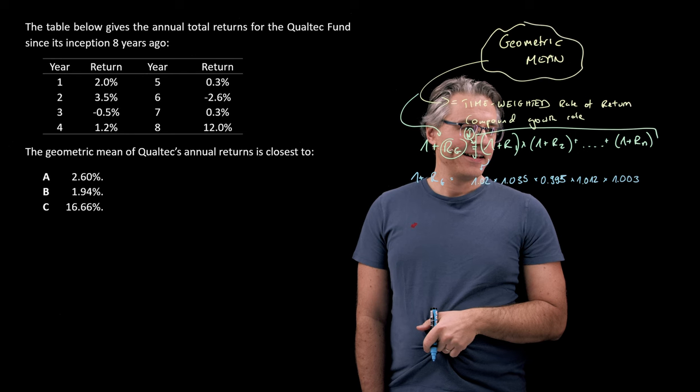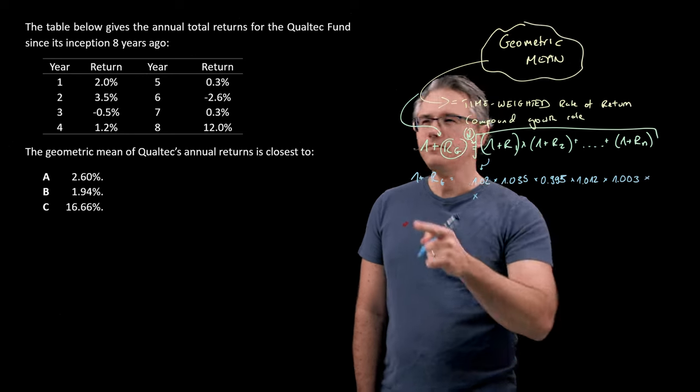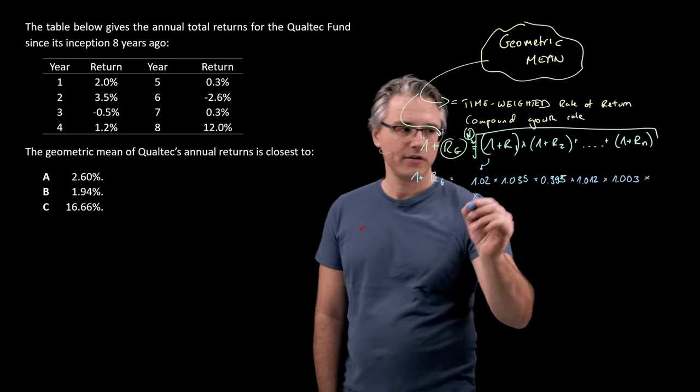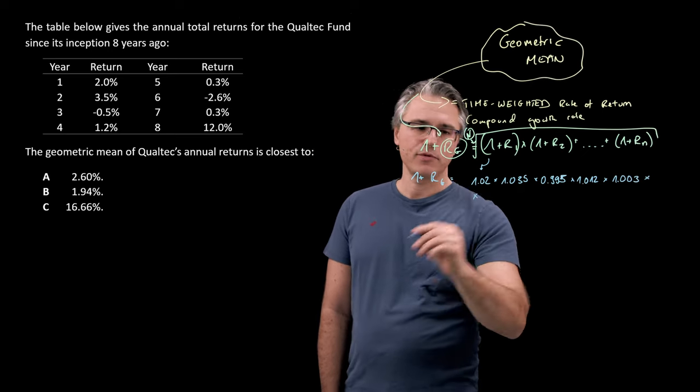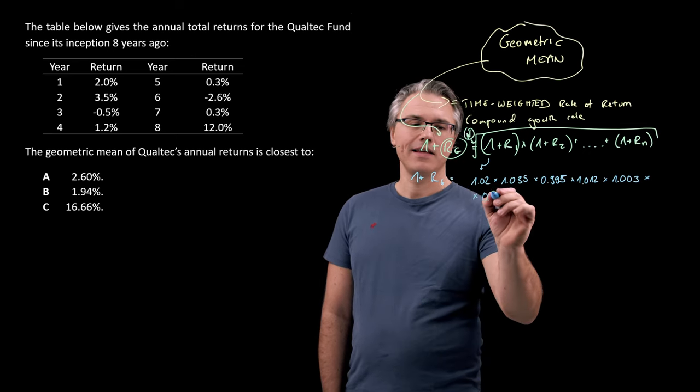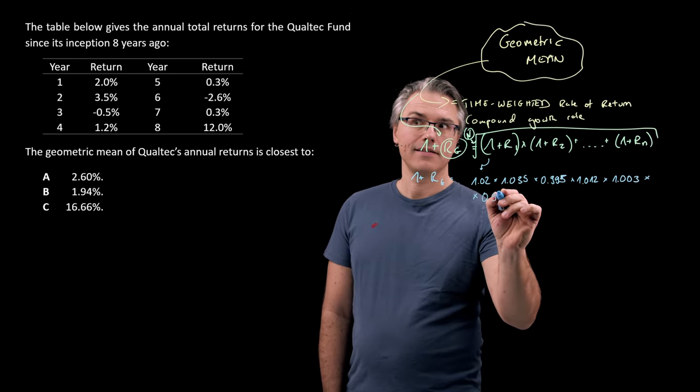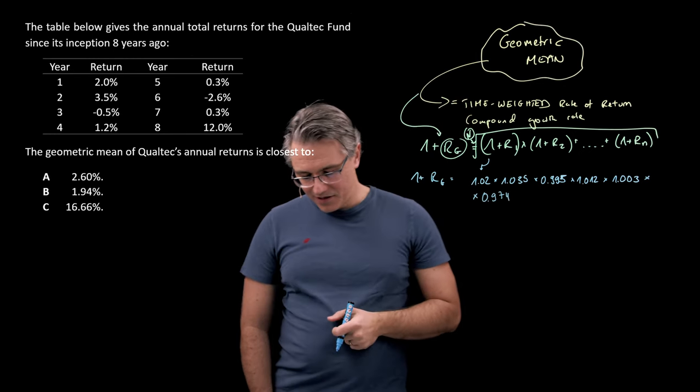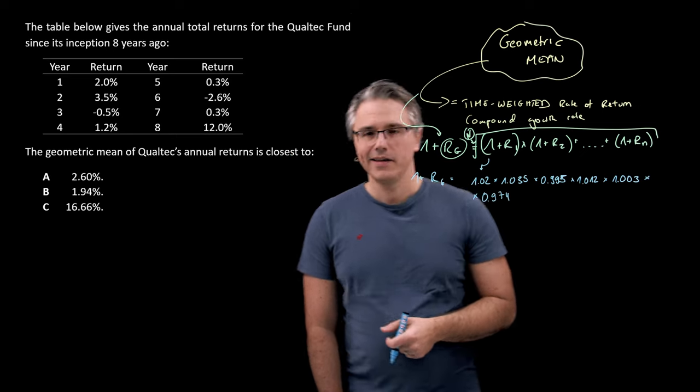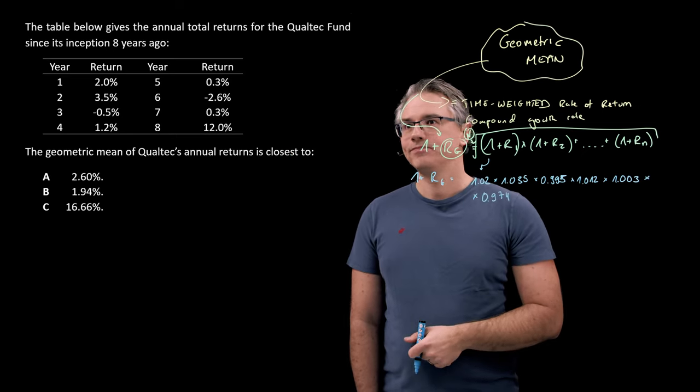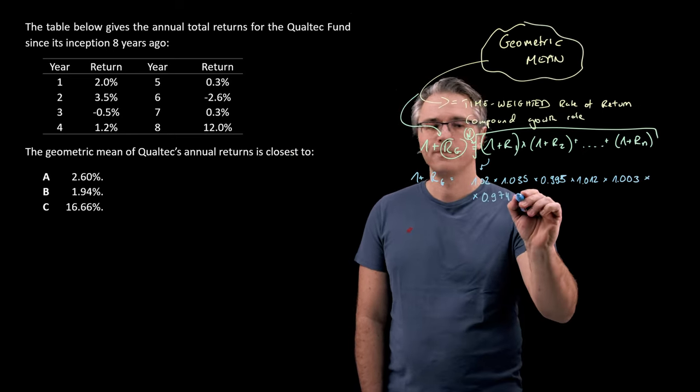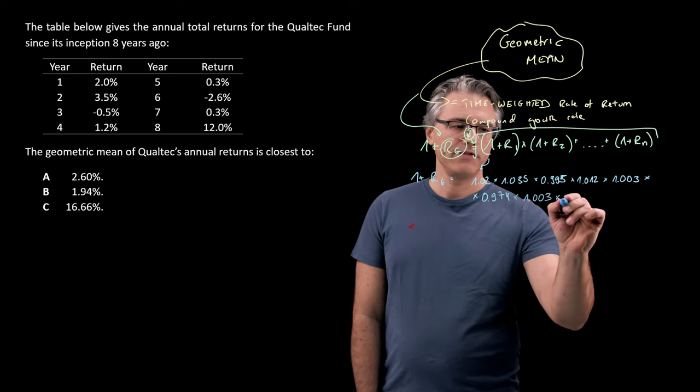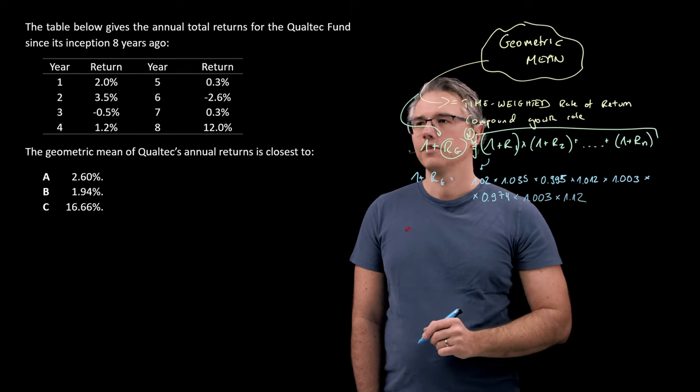And then let's move over here. We've got a negative 2.6. So once again, think about what this would be. 1 minus 2.6% is 0.974. Obviously, if in the exam you're a little bit stressed about getting this wrong, potentially just do it on the calculator. Then we've got 1.003 again, and we've got a 1.12.